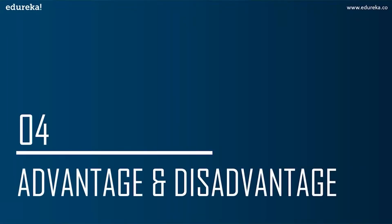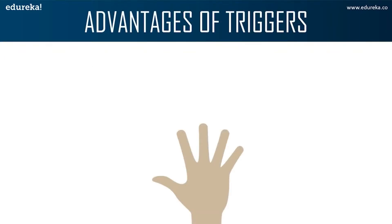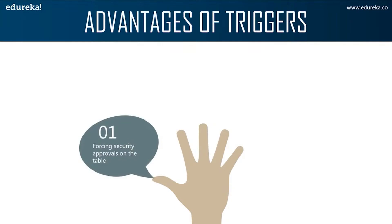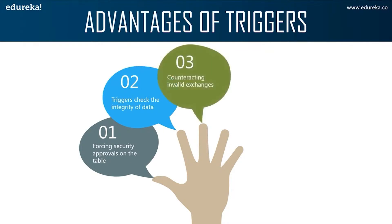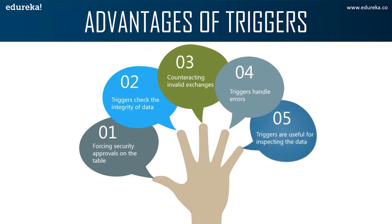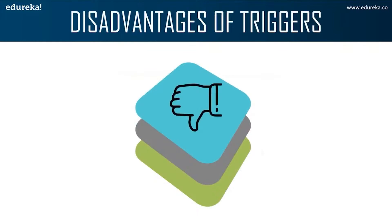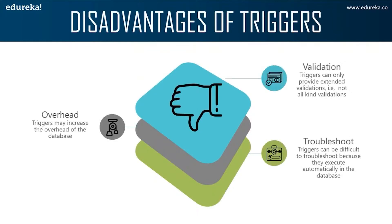Let's now look at the advantages and disadvantages of triggers. Advantages: triggers enforce security on database tables; they provide another way to check data integrity; triggers counteract invalid transactions; they handle errors from the database layer; and they are useful for inspecting data changes in a table. Disadvantages: triggers can only provide extended validation — for simple validations, you cannot use NOT NULL, UNIQUE, CHECK, and FOREIGN KEY constraints in a trigger. Triggers may also increase the overhead of a database, and they can be difficult to troubleshoot because they execute automatically and may not be visible to client applications.